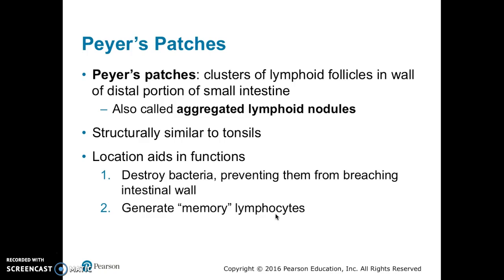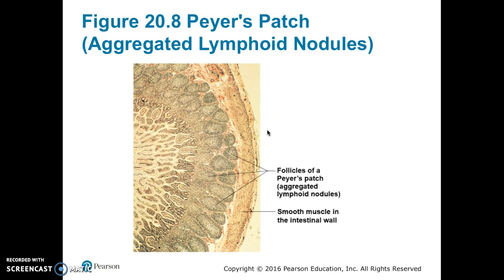Peyer's patches are also called aggregated lymphoid nodules. They are structurally similar to tonsils. Being located in the small intestines, Peyer's patches can destroy bacteria before they breach the intestinal wall and also generate memory lymphocytes.